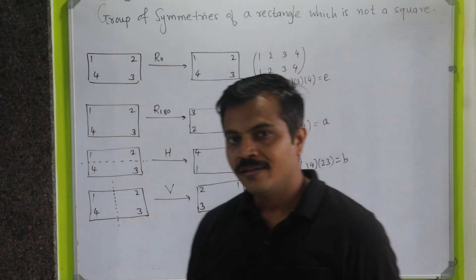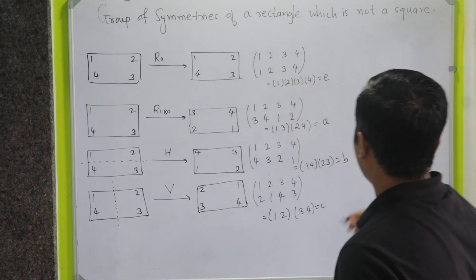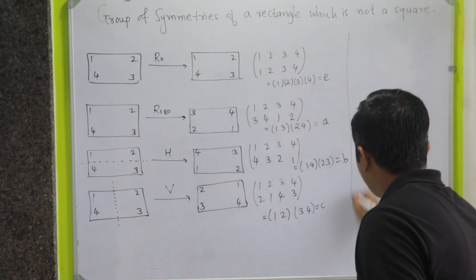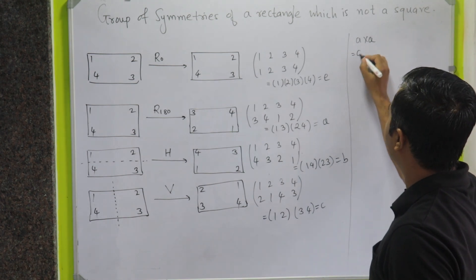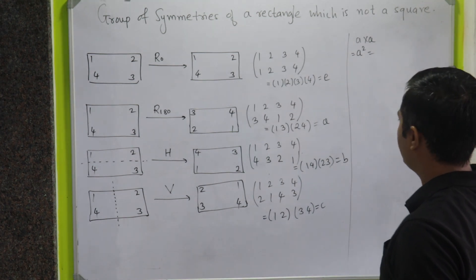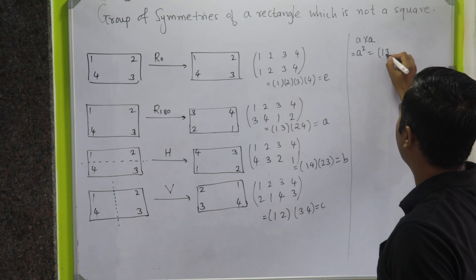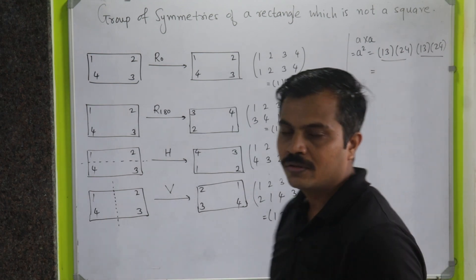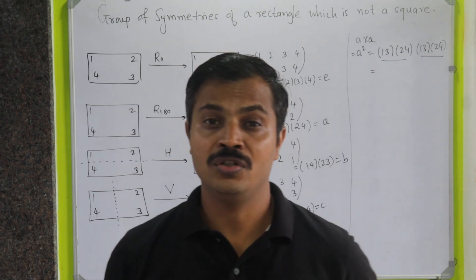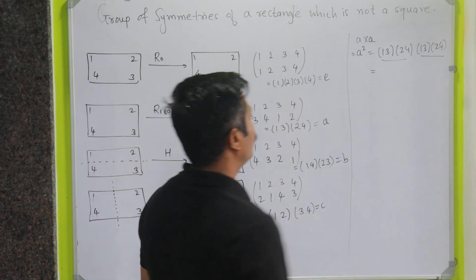Now let us find what is A multiplied by A. So on this side, if we find A multiplied by A, which is actually nothing but A square, that is equal to my A is (1, 3, 2, 4)(1, 3, 2, 4). So these are the simple calculations. So we have to take multiplication of two permutations. How do we do it?